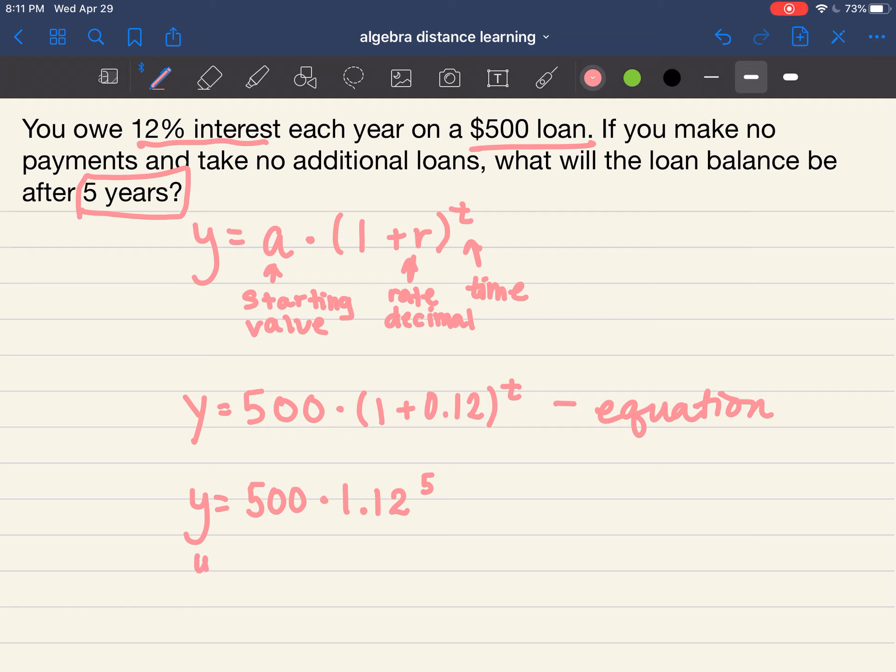So I get y equals 500 times 1.76. Then the next thing I'm going to do, I'm going to do y equals 500 times 1.76.